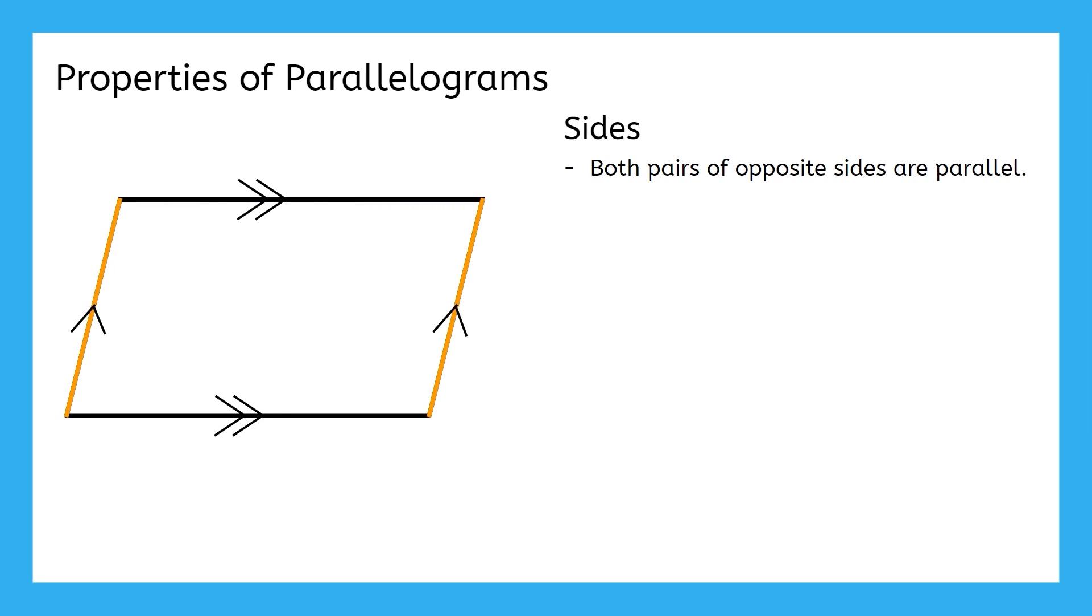In order for both pairs to be parallel, it also means that they have to be congruent. Think about it this way. If I shortened this top side, but left the bottom alone so they were no longer congruent, I can't leave the right side like this because then my lines no longer make a polygon. What would I have to do to the right side to make it connect to the top to create a polygon again?